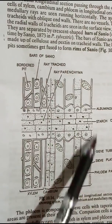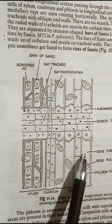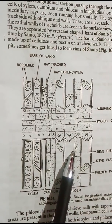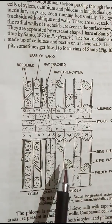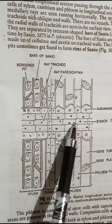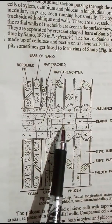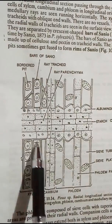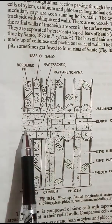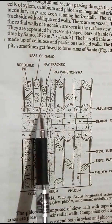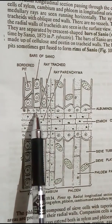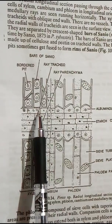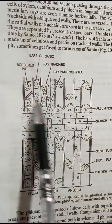The phloem is composed of sieve cells with tapering ends, and the sieve areas are present in the radial walls. In the phloem, companion cells are absent. The medullary rays extend through both xylem and phloem regions and are about 2 to 12 cells in height. In the xylem region, each ray consists of parenchymatous cells filled with starch and ray tracheids, which may occur singly or in series, usually at the margins of the ray.